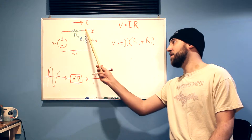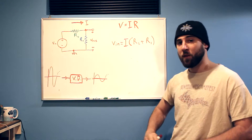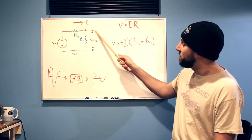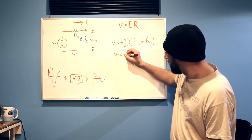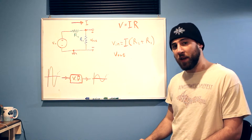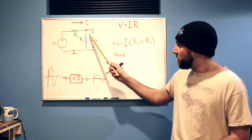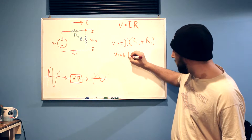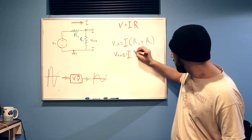We need to analyze this other node right here, which also happens to be the positive terminal of V_out. Since V_out is the voltage between this node and ground, we can describe it as V_out. We can also describe it as a current times a resistance — only this time the current is flowing from this node to ground through R1. So it becomes V_out equals I times R1.